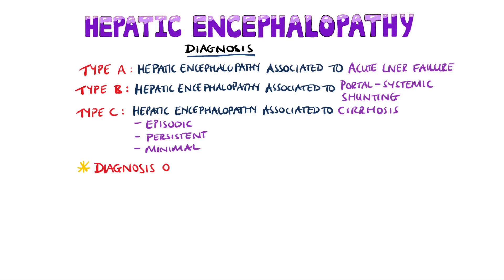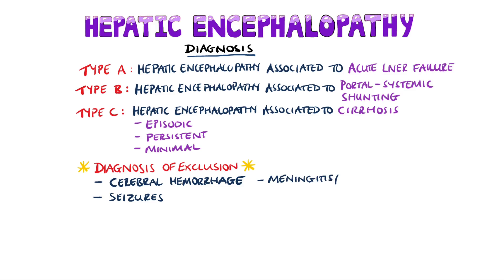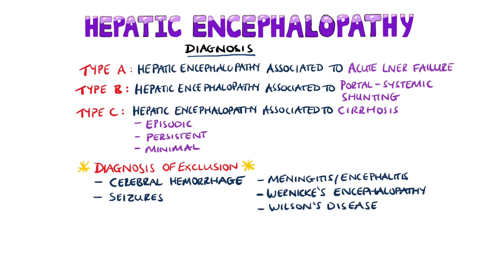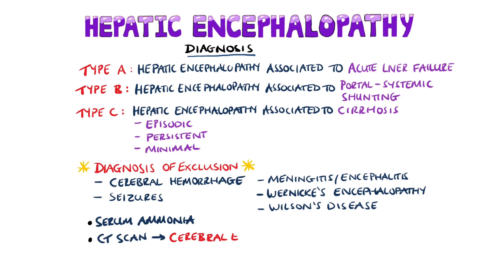Overall, the diagnosis is one of exclusion. You must rule out other causes such as bleeding in the brain, seizures, meningitis, encephalitis, Wernicke's encephalopathy, and Wilson's disease. Serum ammonia levels are raised in most patients, but not all cases of hyperammonemia are associated with hepatic encephalopathy. On a CT scan, the only change is cerebral oedema, seen in stage 4.